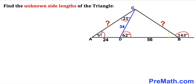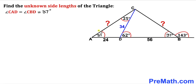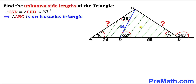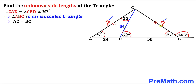Now let's focus on this straight angle, which is 180 degrees. We know that this angle is 143 degrees, so therefore this angle has got to be 37 degrees. We conclude that angle CAD and angle CBD are congruent angles equal to 37 degrees. Therefore, triangle ABC is an isosceles triangle and side length AC is congruent to side length BC, so we only need to find one of these sides.